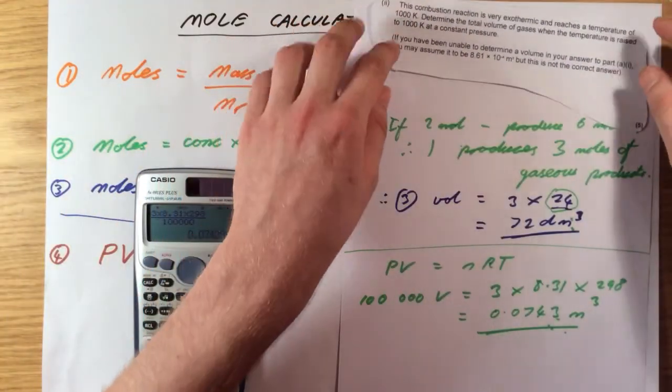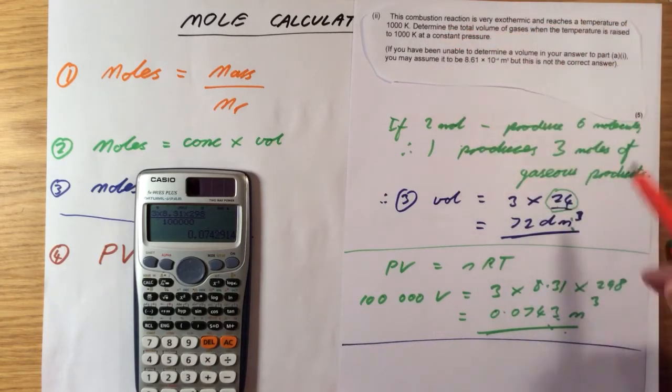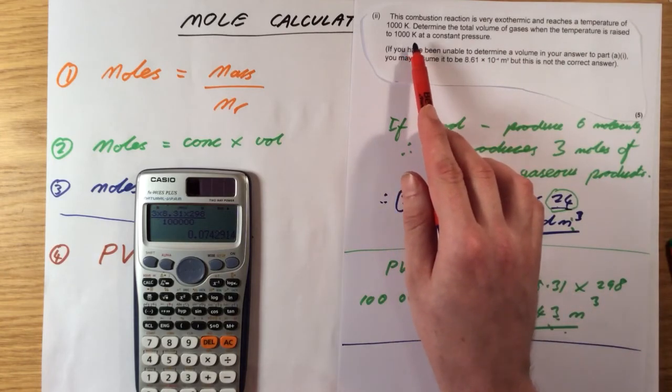The final part. This combustion reaction is very, very exothermic and reaches temperatures of 1,000 Kelvin. Determine the total volume of gases when the temperature is raised to 1,000 Kelvin at a constant pressure. So, if you wanted to just use PV equals nRT again, you could do that, that's absolutely fine. Easy way to do it. The other way to spot is that if everything else is kept constant, it's just going to increase by direct ratio.